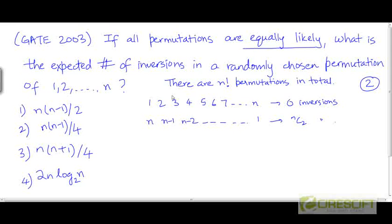So there are going to be no inversions in the sorted sequence, and there are exactly nC2 inversions in the reverse sorted sequence. This is basically the maximum possible number of inversions.